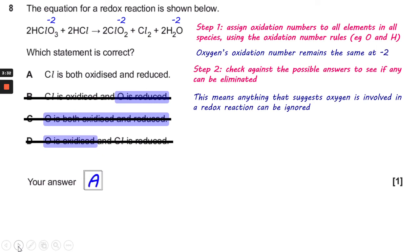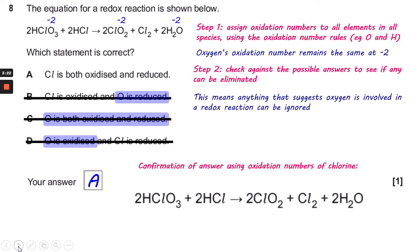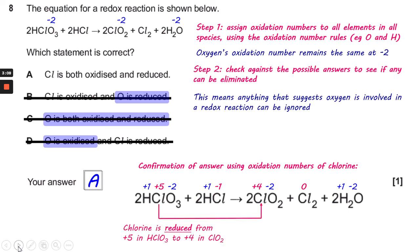So we can put A as the correct answer, but it's worth having a look at why it's correct in the spirit of the question. If we look at the equation again and put in all of the oxidation numbers, with the chlorine highlighted in pink, you can see that chlorine is reduced from plus 5 in HClO₃ to plus 4 in ClO₂, and it's also oxidised from minus 1 in HCl to 0 in Cl₂.